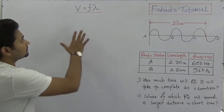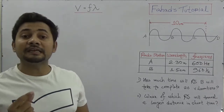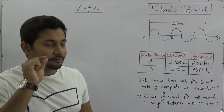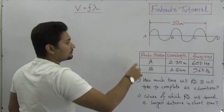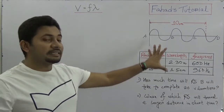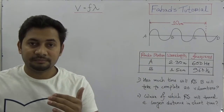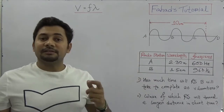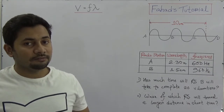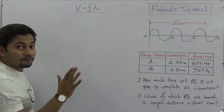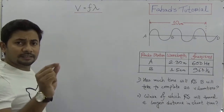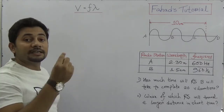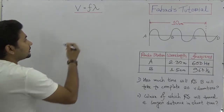V = Fλ is one of the key equations of this chapter, so we need to know how it forms and how to use it to solve similar types of questions. It's very easy, but it's intended for bigger-level students studying waves for the first time, though there are some critical questions too. V is the wave speed, F is the frequency, and lambda is the wavelength.